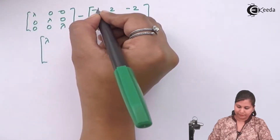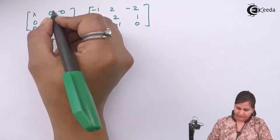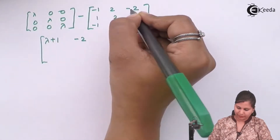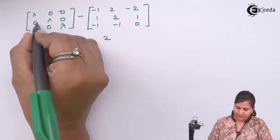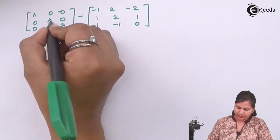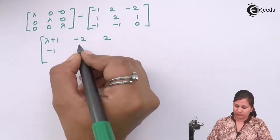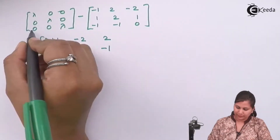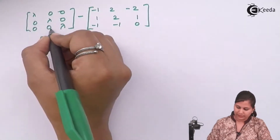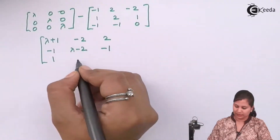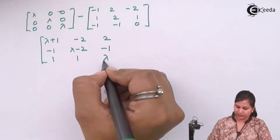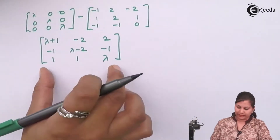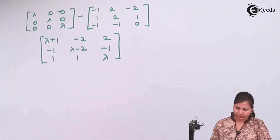Computing the entries: λ minus (−1) gives λ + 1. Then 0 minus (−2) gives −2; 0 minus (−2) gives 2; 0 minus 1 gives −1; λ minus 2; 0 minus 1 gives −1; 0 minus (−1) gives 1; 0 minus (−1) gives 1; and λ minus 0 gives λ. So this is the matrix λI − A we have obtained, and now we will find its determinant.